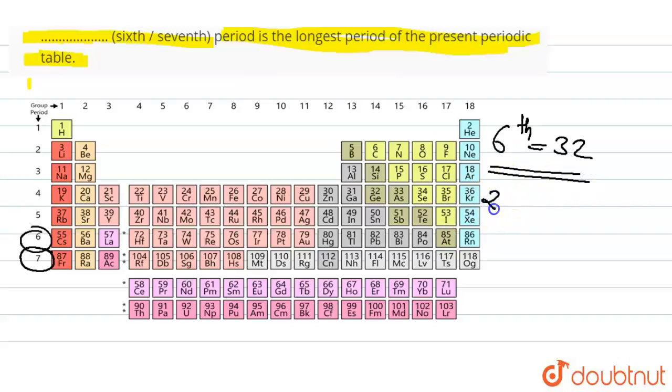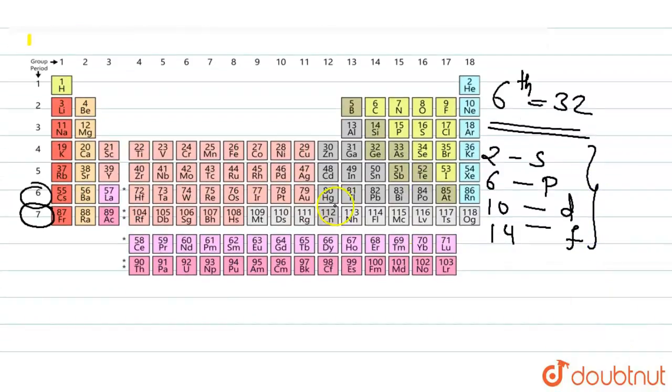Where two elements are in S block, six elements are in P block, 10 elements are in D block, and 14 elements are in F block transition. And the seventh period is not longest. Why?